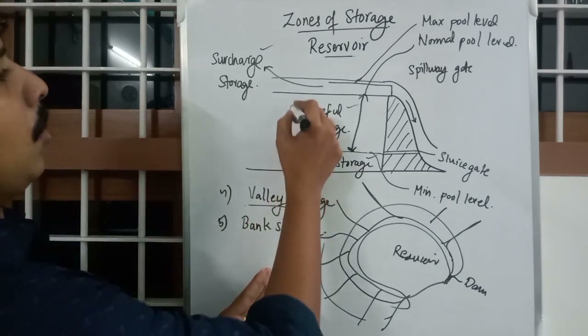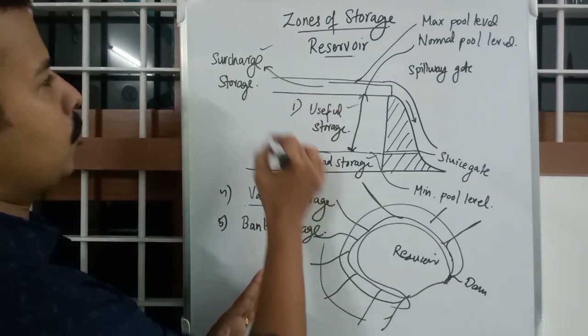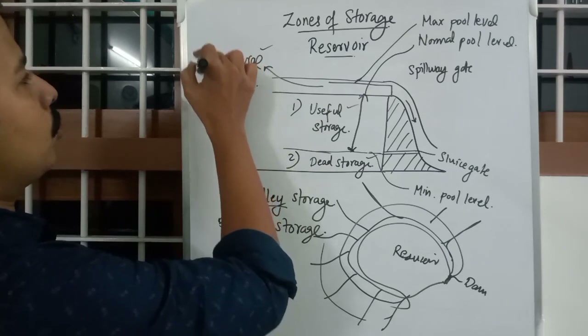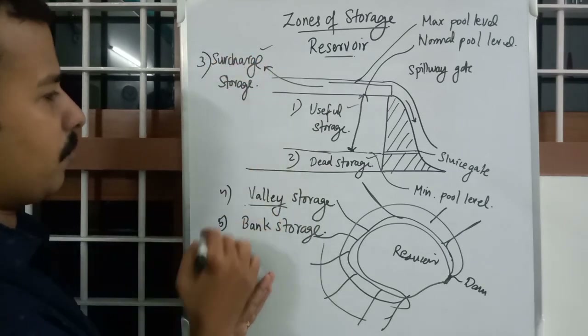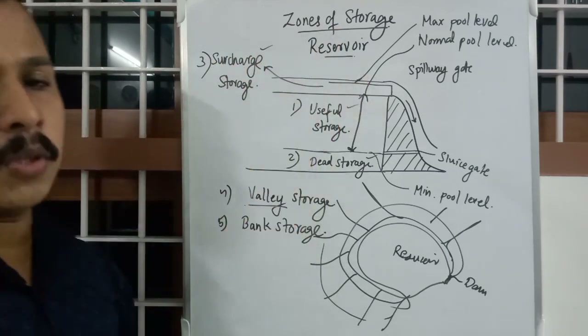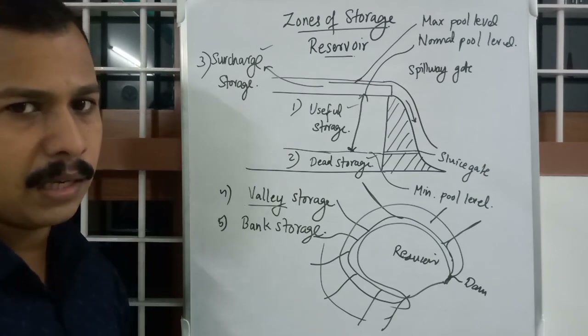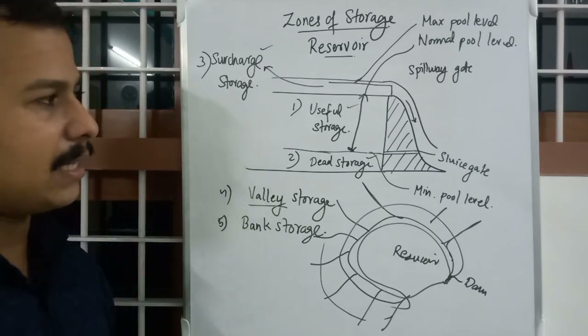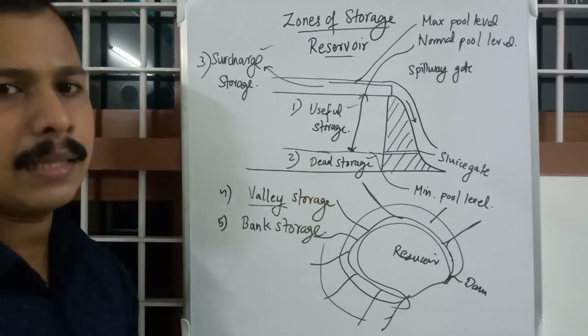So there are five zones of storage in a reservoir: Useful Storage, Surcharge Storage, Dead Storage, Valley Storage, and Bank Storage. I hope you understand — it's pretty simple. Thank you.